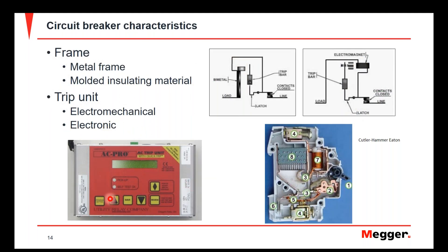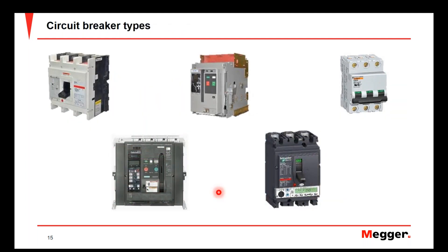For electronic trip units, there will be a set of current sensors mounted to the main conductors of the circuit breaker that communicate signals to the electronic trip unit to allow the breaker to trip. The electronic trip unit outputs to a trip mechanism and opens the breaker. These are some different circuit breaker types we see during primary injection testing — molded-case circuit breakers, metal frame breakers both outfitted with electronic trip units, and miniature breakers you may see in a control power scheme.